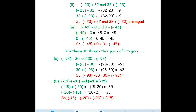One more example: negative 45 plus 0 and 0 plus negative 45. Negative 45 plus 0 is negative 45. For 0 plus negative 45, this plus and negative becomes minus, so 0 minus 45 is negative 45. They are also equal. Now try this with three other pairs of integers.